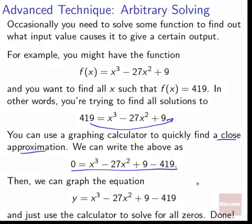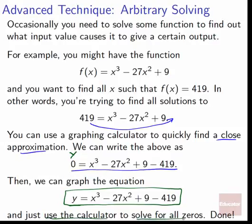We can use a graphing calculator to quickly find a close approximation. So we can write the above as 0 = x^3 - 27x^2 + 9 - 419. We're just moving the 419 to the other side of the equation through subtraction. Now, at this point, if we've got 0 equals this stuff, well, what we can do is we can say, hey, let's just make this y equals this stuff. So we swap out the 0 for a y and now we've got something that we can graph. We can graph y = x^3 - 27x^2 + 9 - 419.